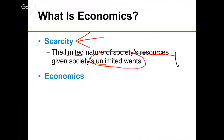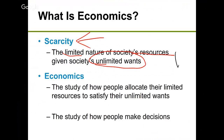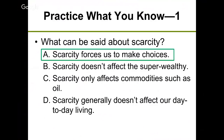So we have unlimited wants and we always want more stuff, but we have limited resources — that's called scarcity. Economics is the study of how societies or groups of people allocate limited resources to satisfy their unlimited wants. Every resource is scarce, but a few are not — for example, air is not scarce, but clean air is. Water wasn't scarce during Hurricane Harvey, but clean water is.